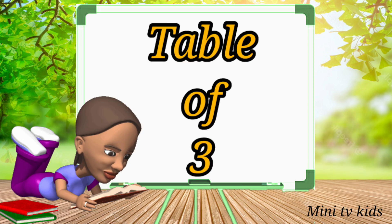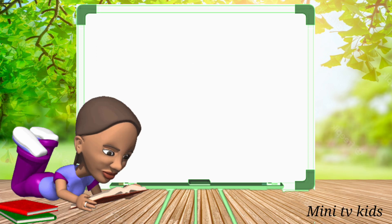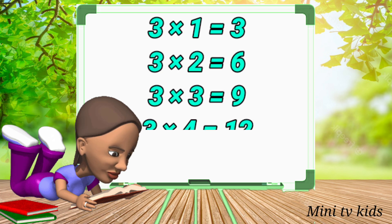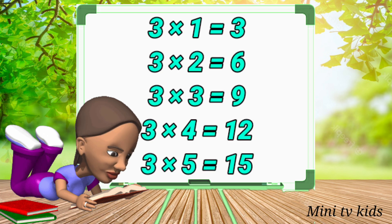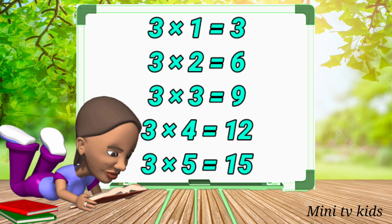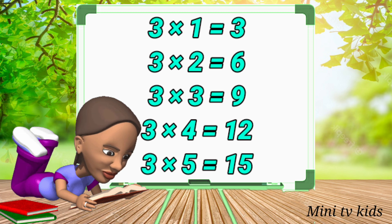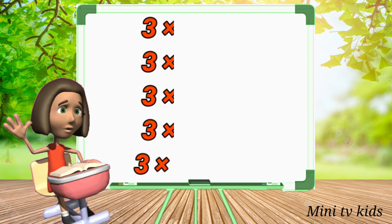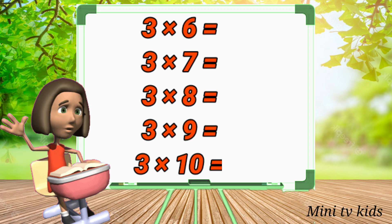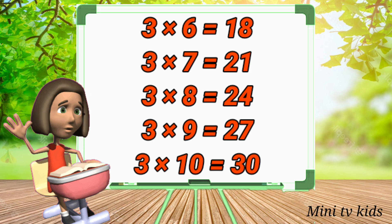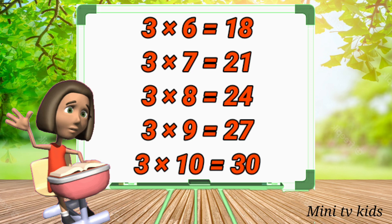Table of 3. 3 1's are 3, 3 2's are 6, 3 3's are 9, 3 4's are 12, 3 5's are 15, 3 6's are 18, 3 7's are 21, 3 8's are 24, 3 9's are 27.